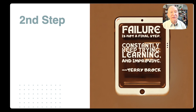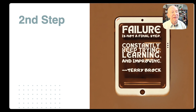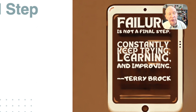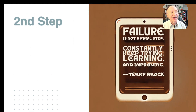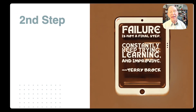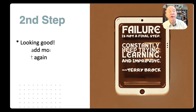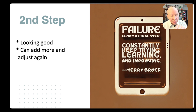Now look at this second step — this is what it looks like. It says 'failure is not the final step, constantly keep learning, keep trying, learning and improving.' This is the way it came out in the second step. You made it look good by doing the right things using that Grab Text. You can add more and you can adjust it again. I'm going to show you how to do that at the end of this video, so stay with me — I'll show you step by step.